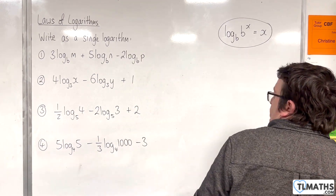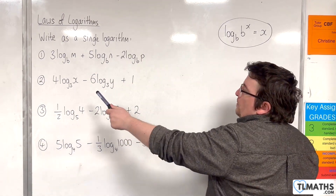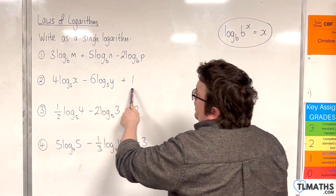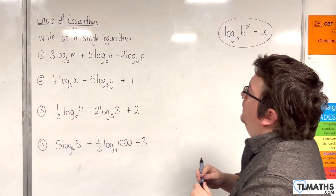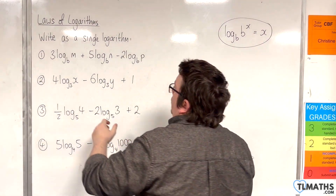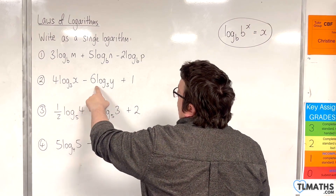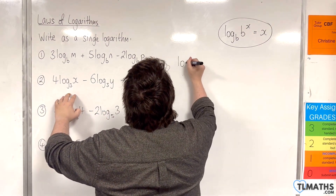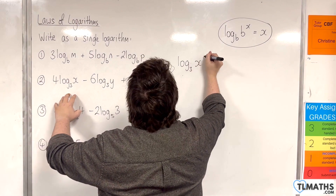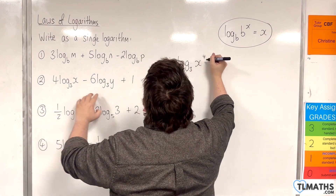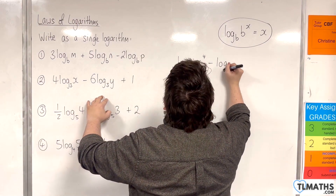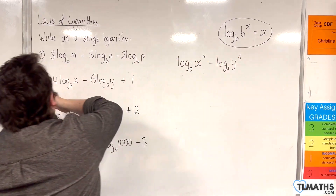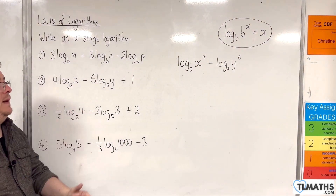Let's look at number 2: 4·log base 3 of x, take away 6·log base 3 of y, plus 1. First of all, let's deal with the 4 and the 6 — bring them up to the power. So we'll have log base 3 of x to the 4, take away log base 3 of y to the 6.